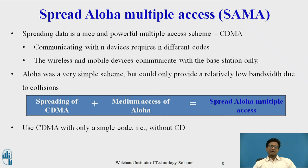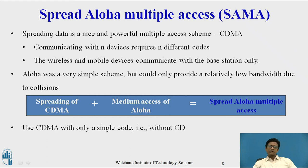Now let us look at the next scheme: spread Aloha multiple access. CDMA senders and receivers are not simple devices. Communicating with n devices requires programming the receiver to decode n different codes, meaning the CDMA scheme requires n unique pseudorandom numbers. Wireless and mobile devices communicate with a base station only. Aloha was a very simple scheme but could only provide relatively low bandwidth due to collisions. Spread Aloha multiple access is a combination of the spreading of CDMA plus the medium access of Aloha.